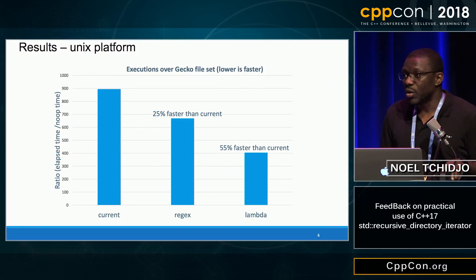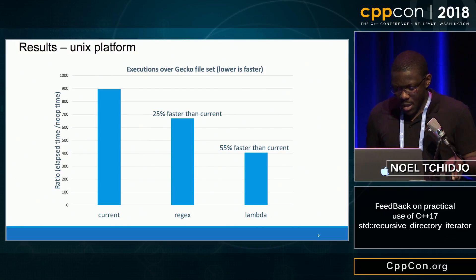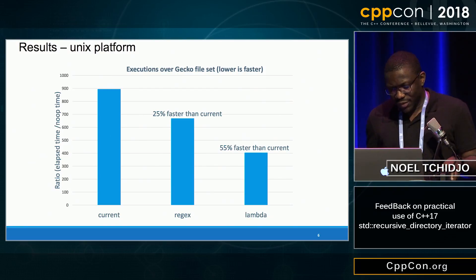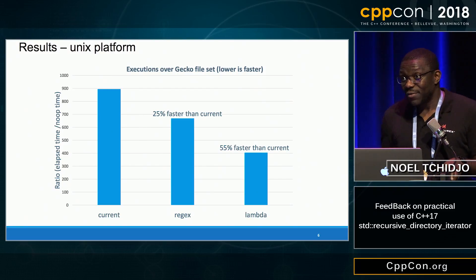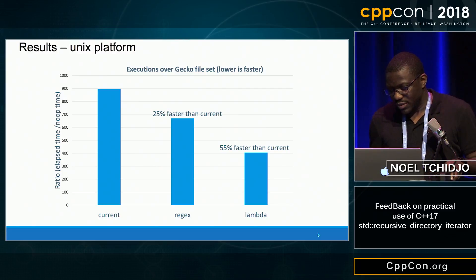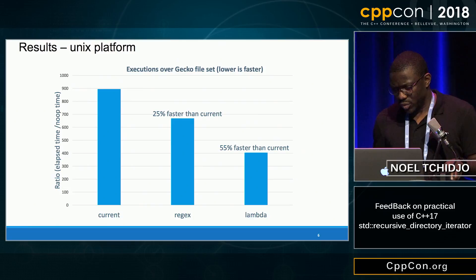On Unix platform, when running over the Gecko file set, we have the regex version 25% faster than the current version, and the lambda version 55% faster than the current version.